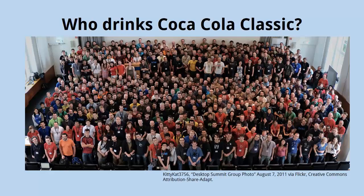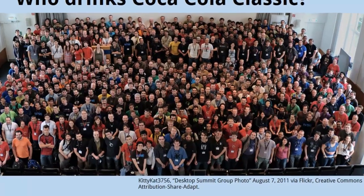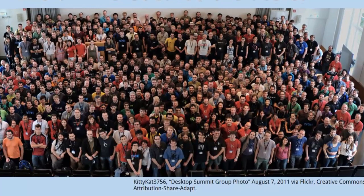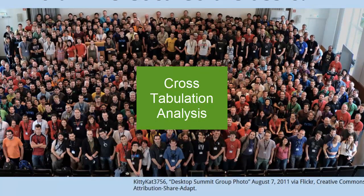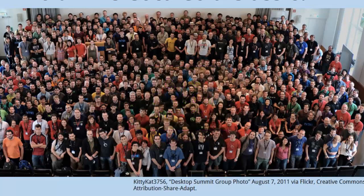Let's say we want to find out the demographics and characteristics of those people who prefer Coca-Cola Classic as their primary beverage. Our goal is to create a cross-tabulation analysis, which is a matrix or table of data showing the relationship of a product to a segment of its consumers. We can also compare the consumers of a product to those of its competitors.